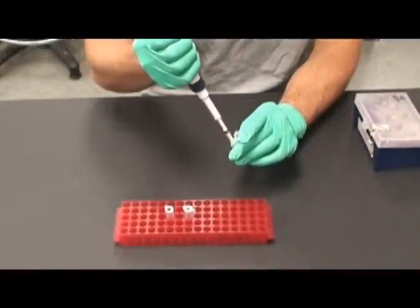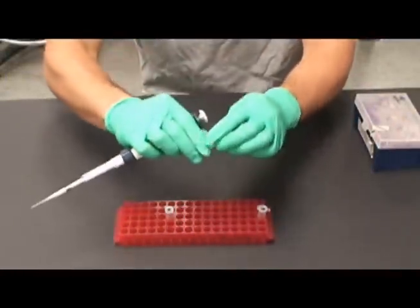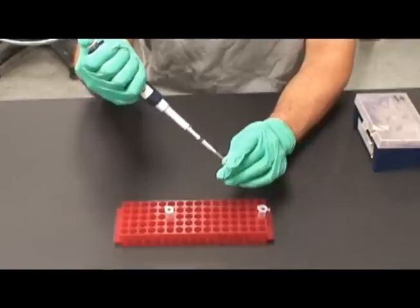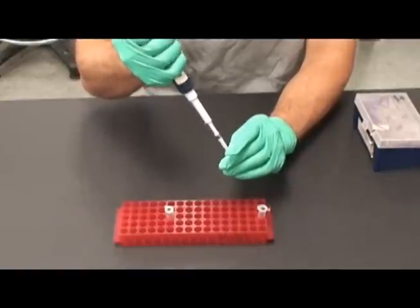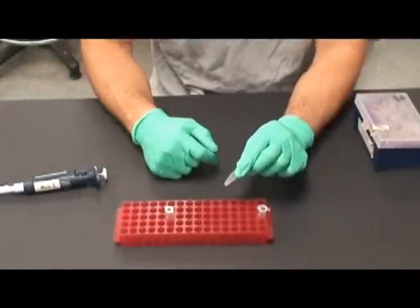Add 5 microliters of the plasmid DNA to one of the competent cell tubes. To transfer such a small amount, make sure to submerge the pipette tip into the liquid before expelling the contents of the tip. Label this tube plasmid DNA.